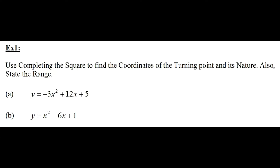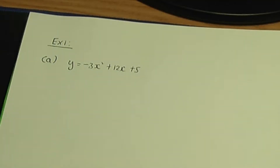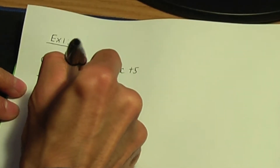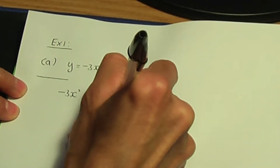Example 1: Use completing the square to find the coordinates of the turning point and its nature, and also state the range. Part a: y equals minus 3x squared plus 12x plus 5. So we have y = -3x² + 12x + 5. The first step is to complete the square of the quadratic. Let me copy down the quadratic: -3x² + 12x + 5.